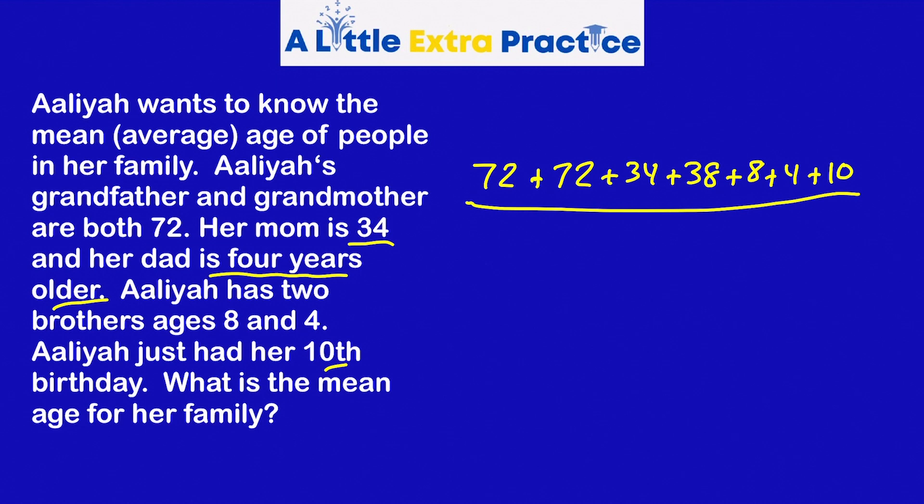Now, how many people do we have here? One, two, three, four, five, six, seven. So I'm going to double check. I have the grandfather, grandmother, mom, dad, Aaliyah, and her two brothers.